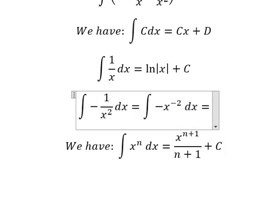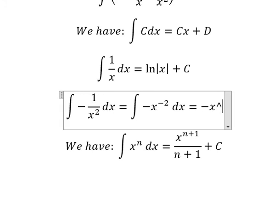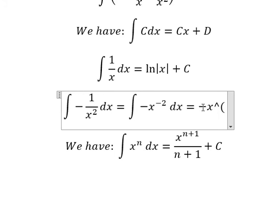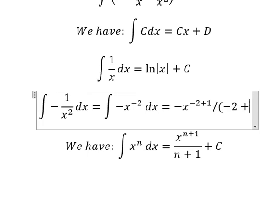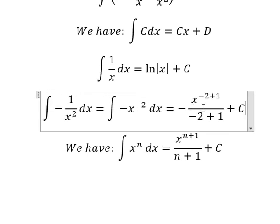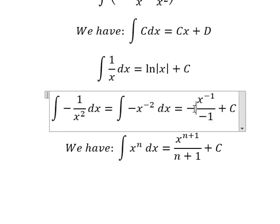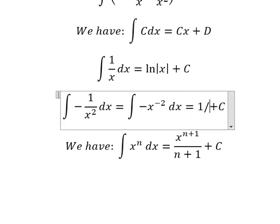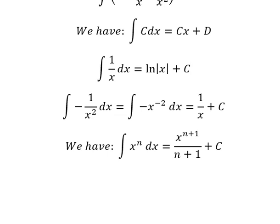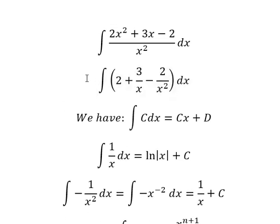So we have negative x to the power of (-2 + 1) over (-2 + 1), plus C. This gives us negative 1 over negative 1. Simplifying, the negatives cancel, and we can write this as 1/x. So we return back to the result.